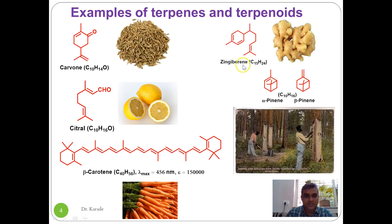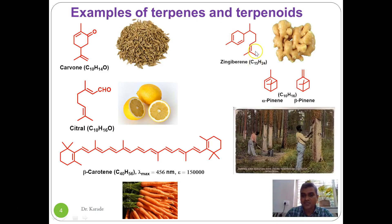Let us take a few more examples of terpenoids. Carvone is an alpha-beta unsaturated ketone present in caraway seeds, which are a main constituent of spices. Zingiberene contains 15 carbon atoms and three double bonds, is a homoannular diene, and is the main constituent of ginger.